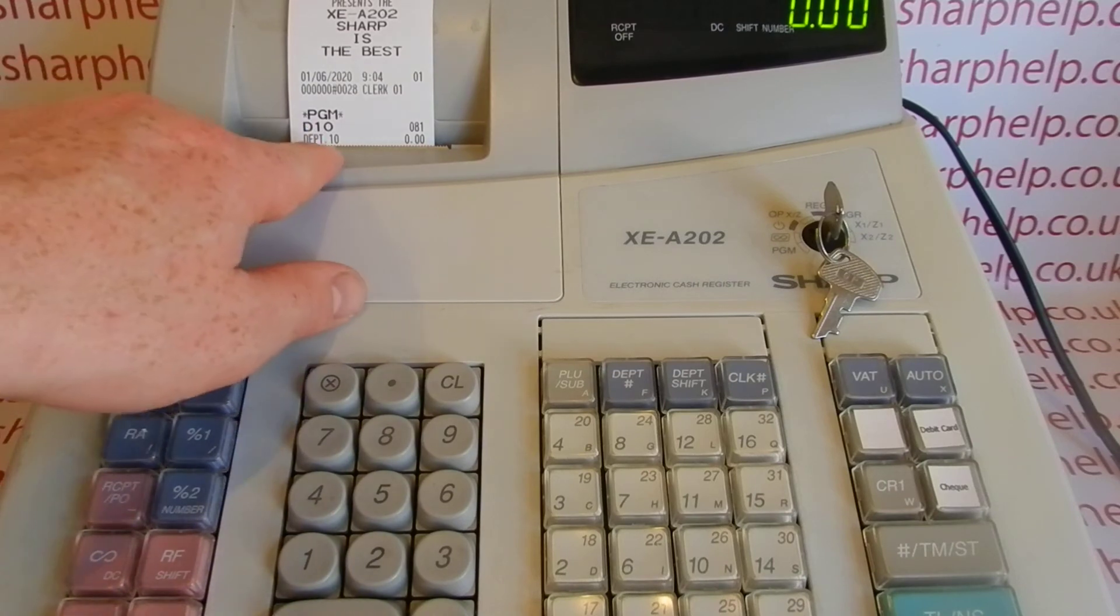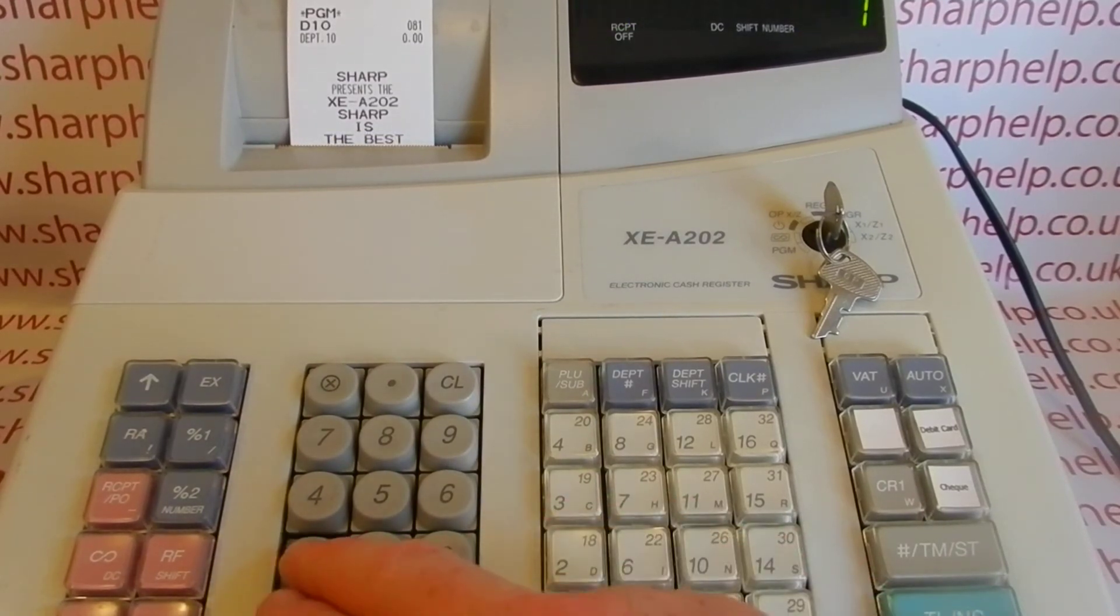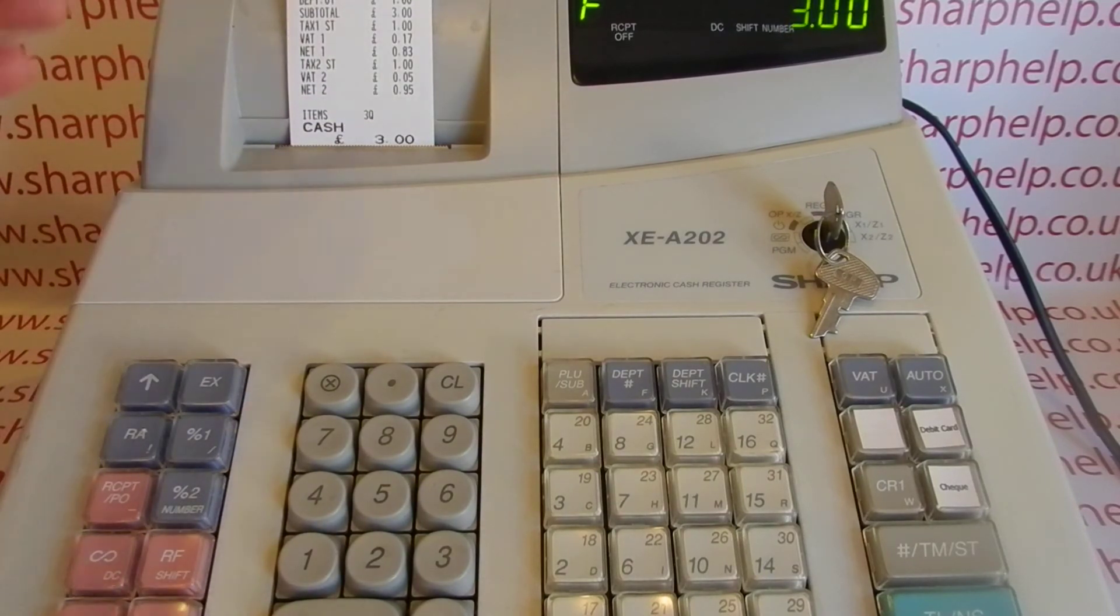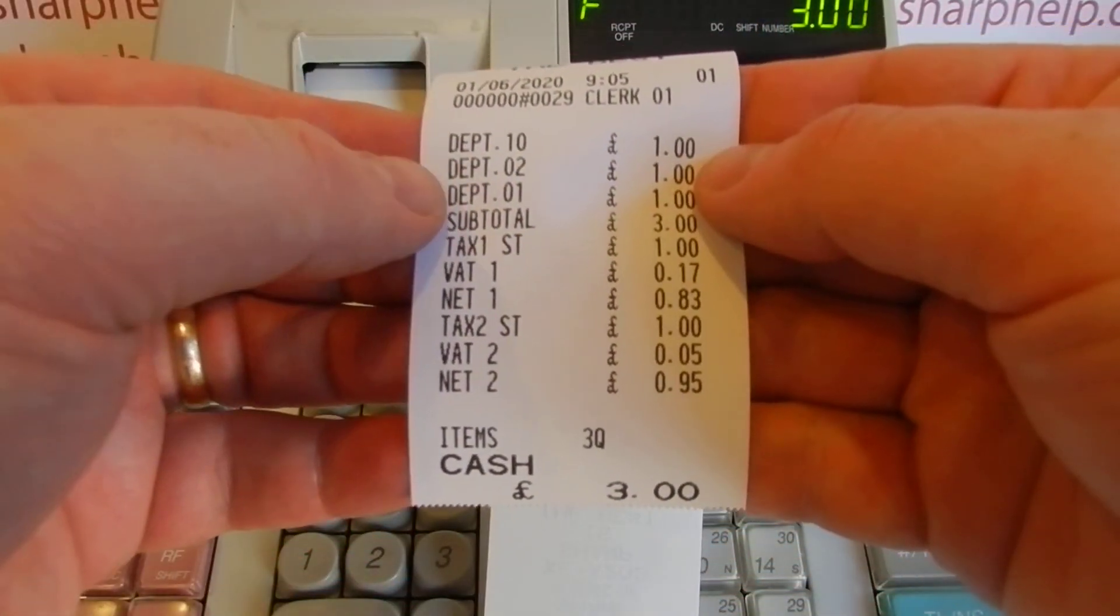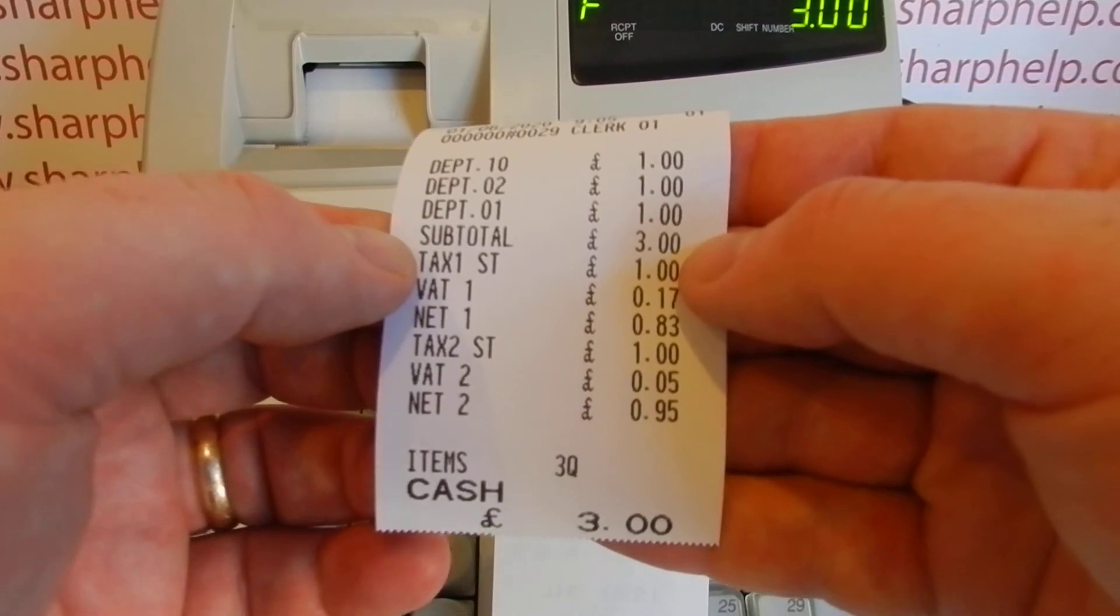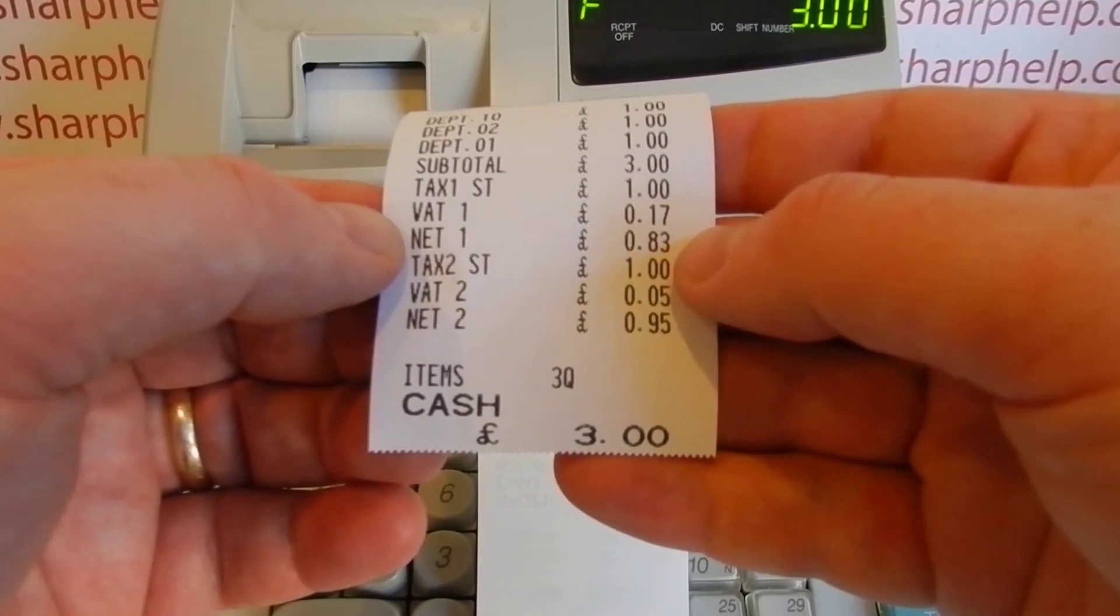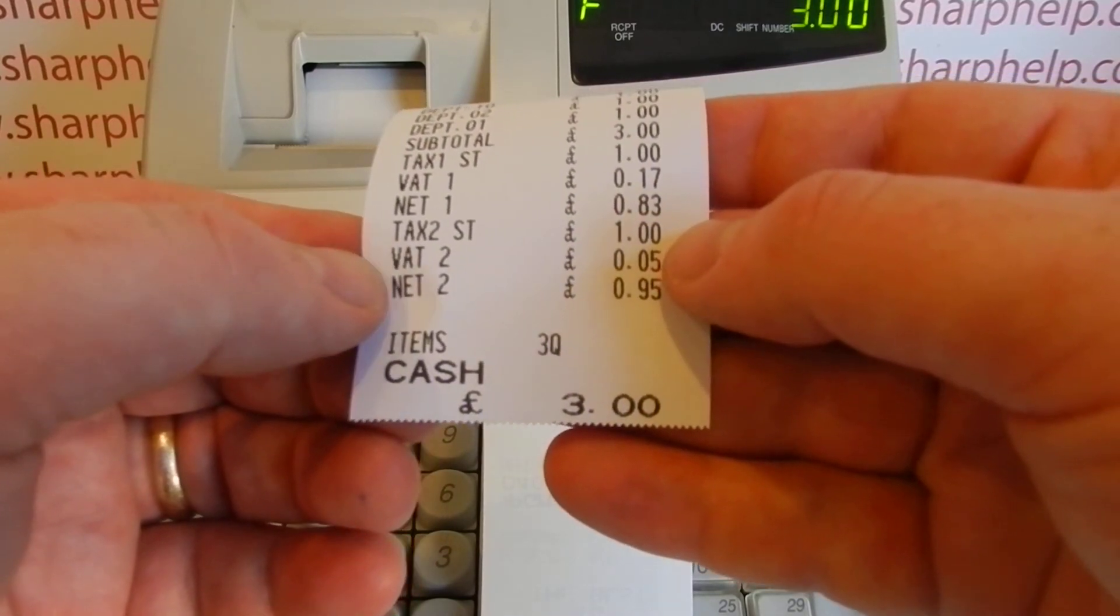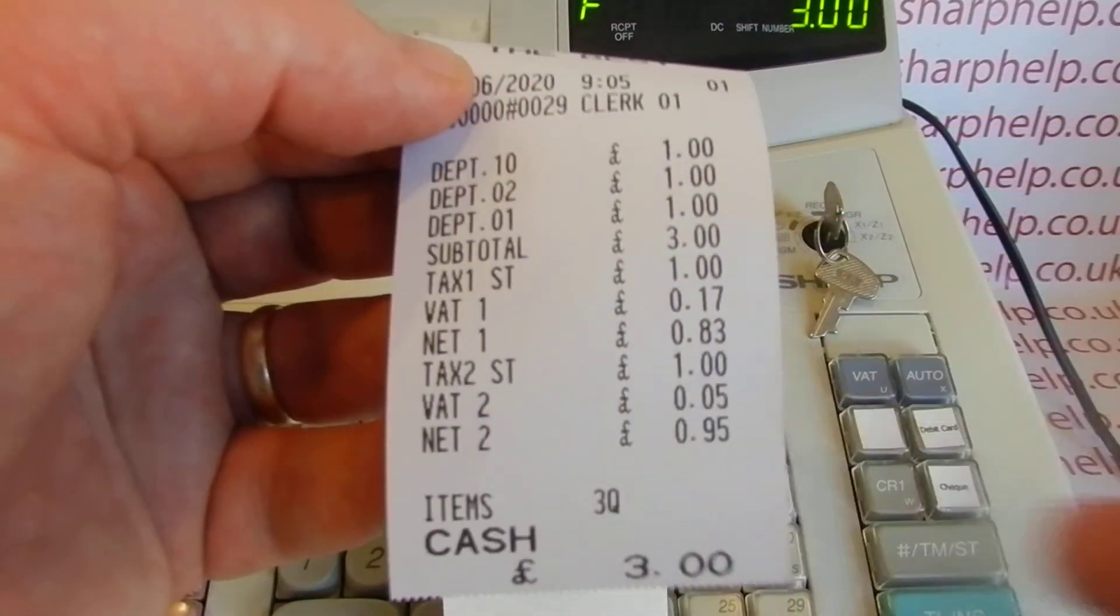Key back to REG, and then we've got department 10 with no tax settings. If we now sell a pound through department 10, a pound through department 2, and a pound through our department 1, I think they cover our three different tax settings. So you can see here on this receipt that's printed out, department 10 is a pound, department 2 is a pound, department 1 is a pound. I've got a subtotal of three pounds. Tax 1 is a pound because I've only sold a pound from a tax 1 department, which was department 1. So that's got the 17p and the 83p which were previously explained. And then my tax 2 total is a pound with the tax being net 95p and 5p tax. So the bread department has no tax on it. Obviously, it looks better when you've got your department descriptions programmed in as well, so it makes a bit more sense to you.